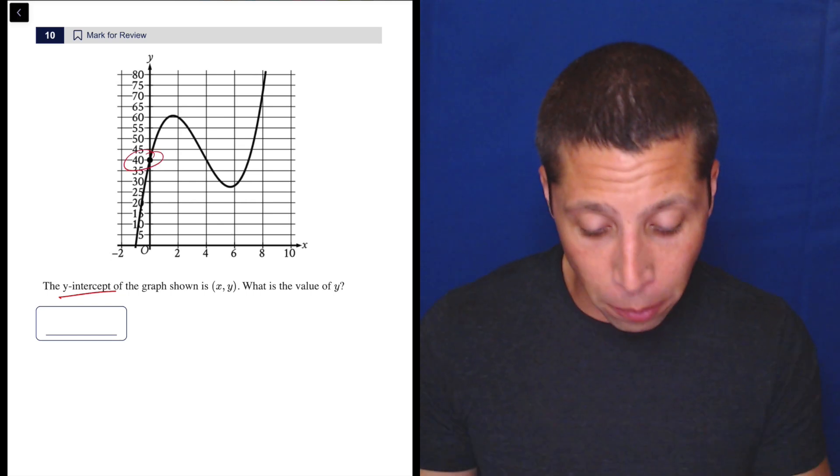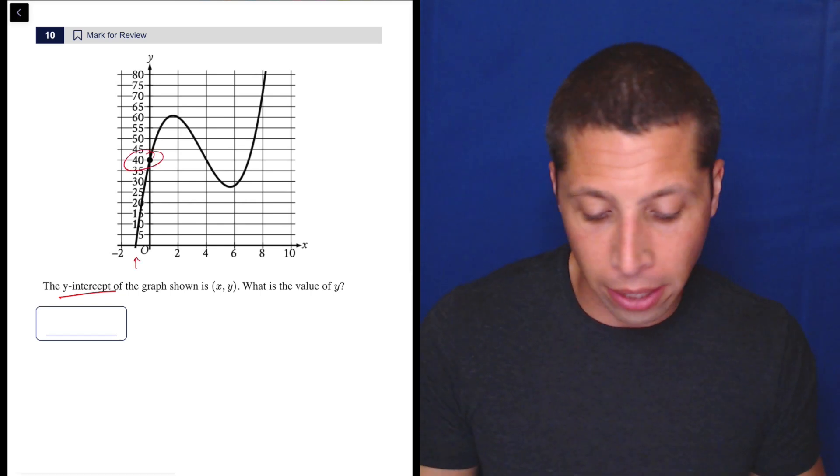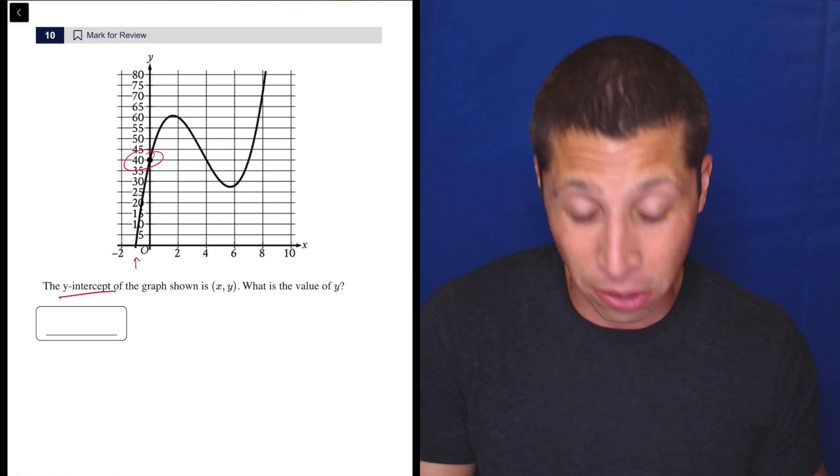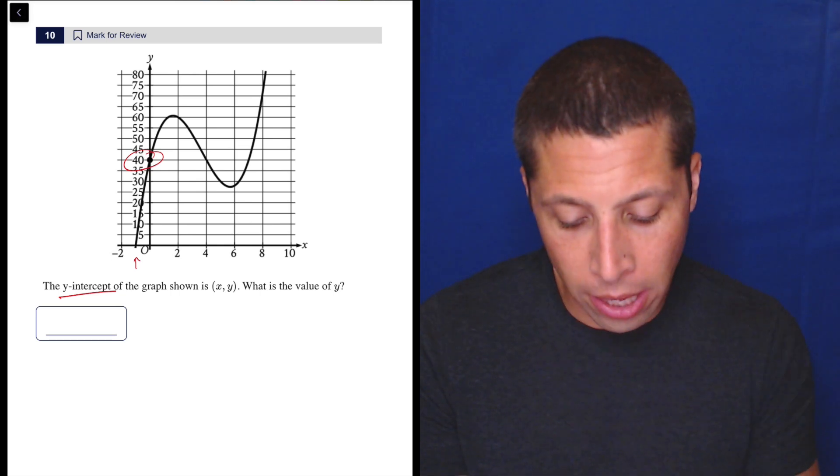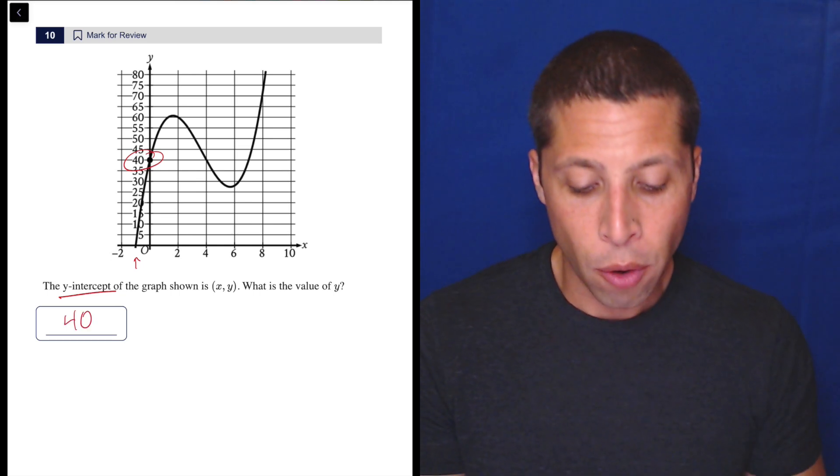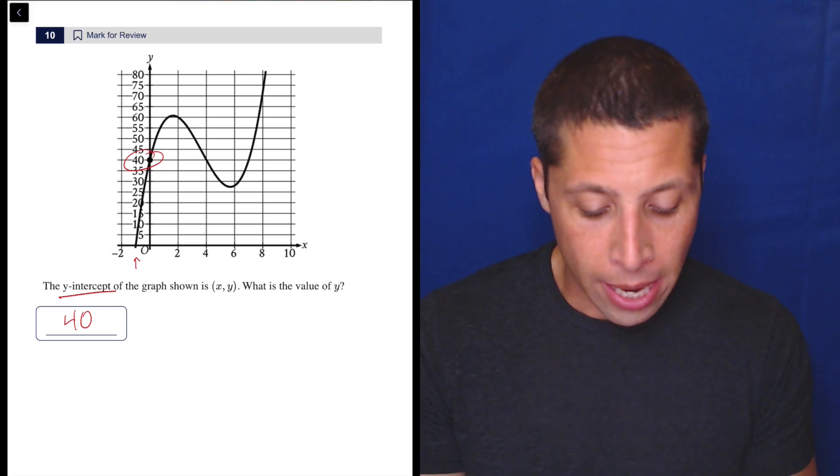There's no x-intercept that we can really see. I mean, maybe there's one here I guess, but they don't point it out to us so I wouldn't want to guess what it is. But yeah, the y-intercept is very clearly at 40, so that is the answer. Remember, the y-intercept is a point.